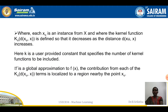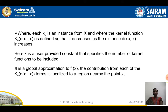Where each x_u is an instance from the training set, and the kernel function k_u into the distance between x_u and x is defined so that it decreases as the distance d(x_u, x) increases. Here k is the user-provided constant that specifies the number of kernel functions to be included — that is, how many kernel functions we have to include depends upon our k value.